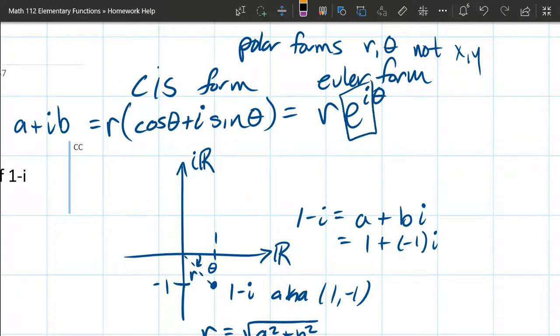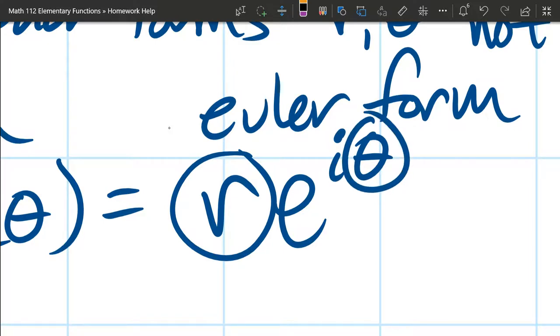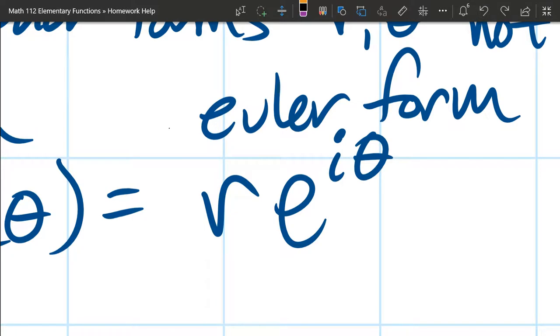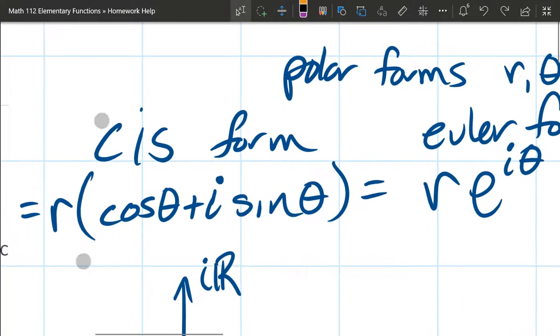And this e to the i theta, don't think too much about it. It's basically a placeholder. What in the heck is e to the i theta? Don't worry about that too much. Just be more concerned about here's the radius multiplied out front, and then here's the angle theta right here. This will make a lot of computations much, much easier. It's also a lot less writing than writing all this stuff out right here.